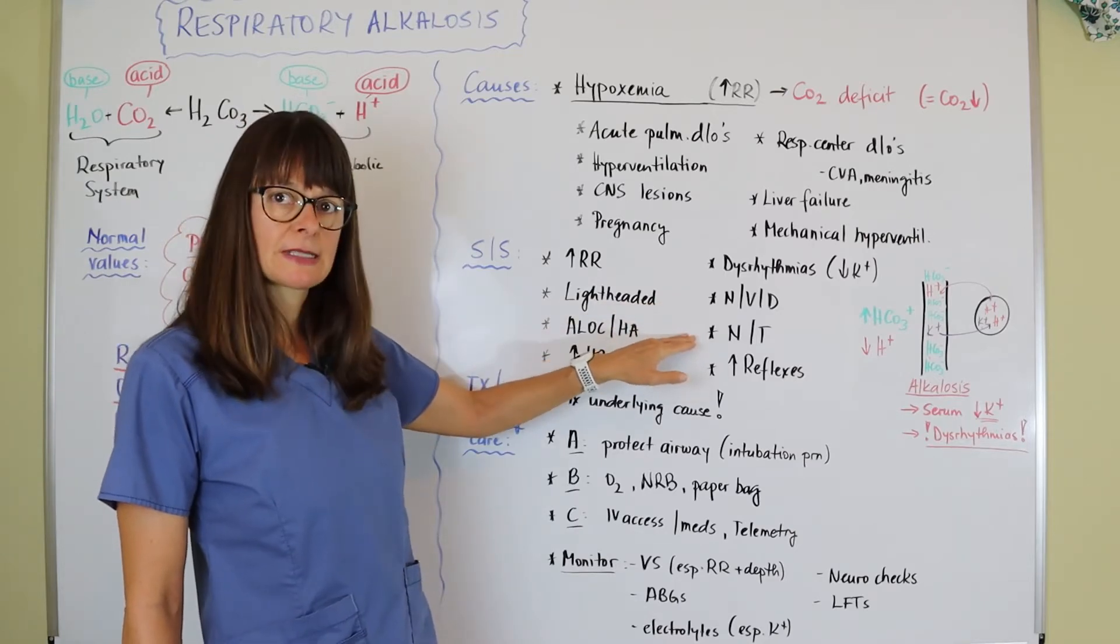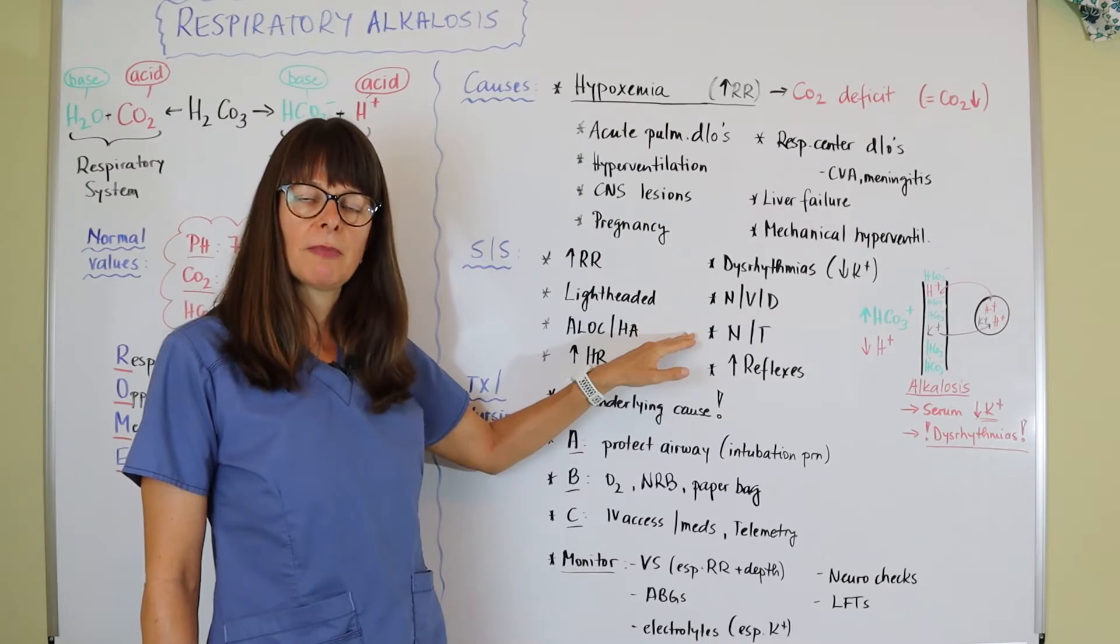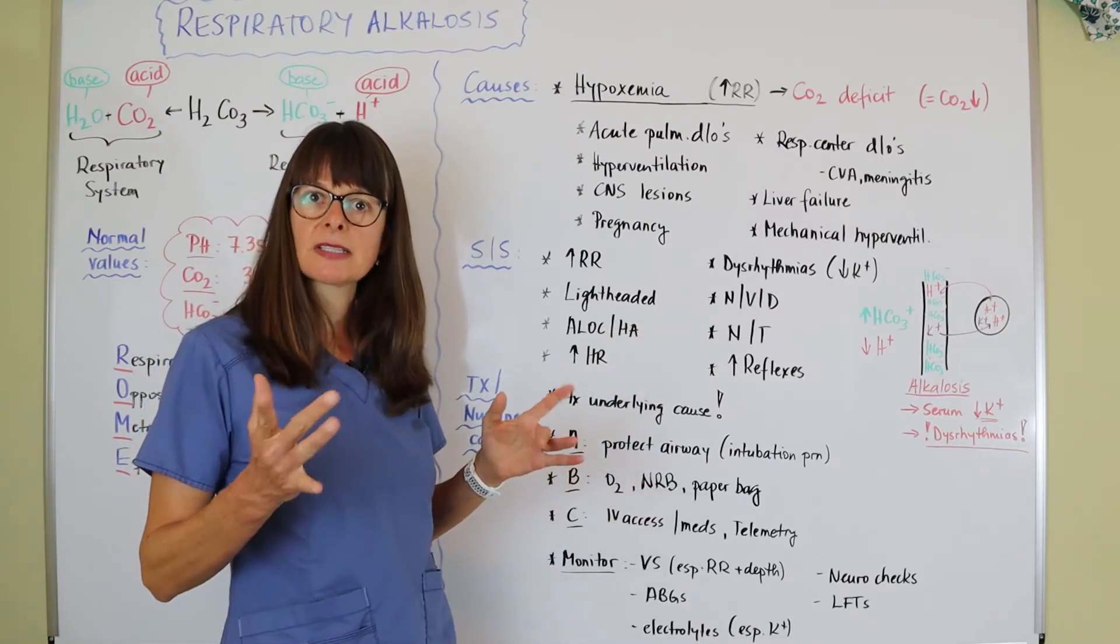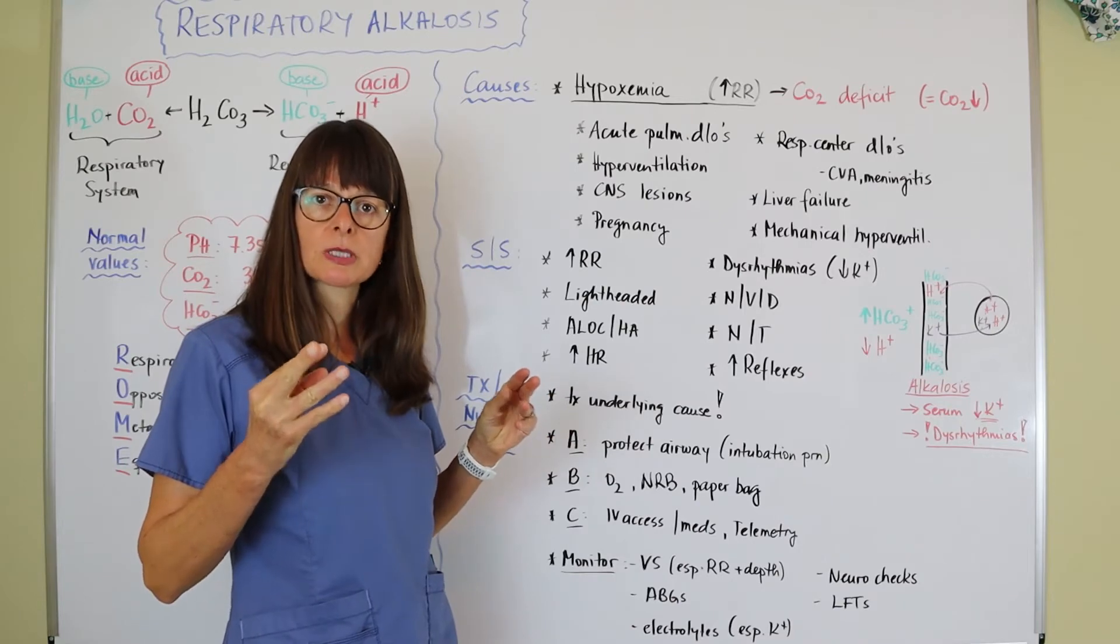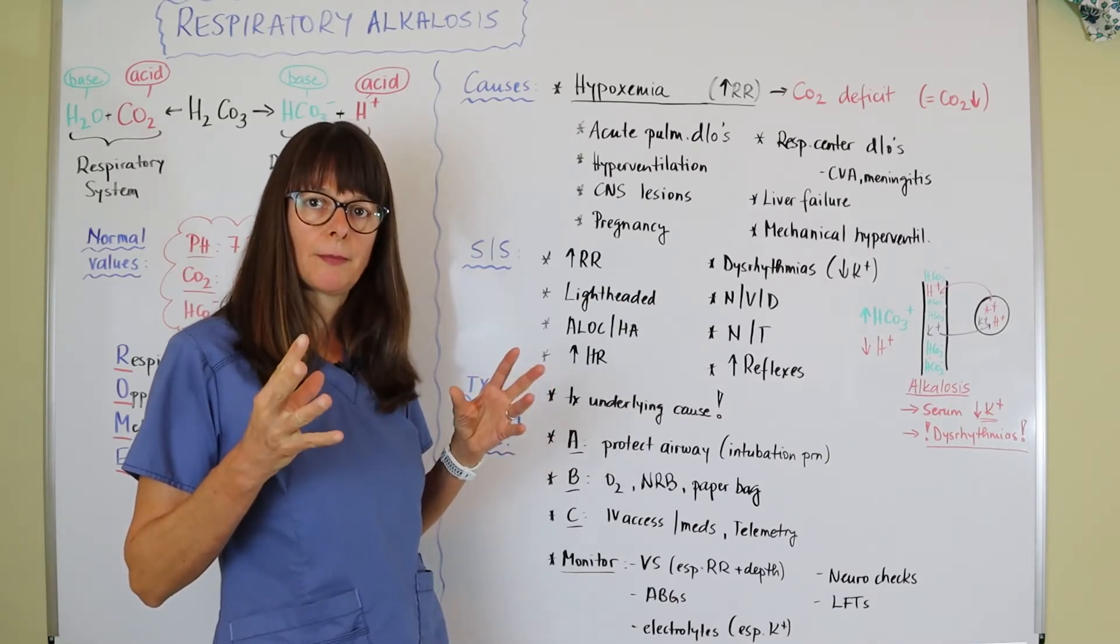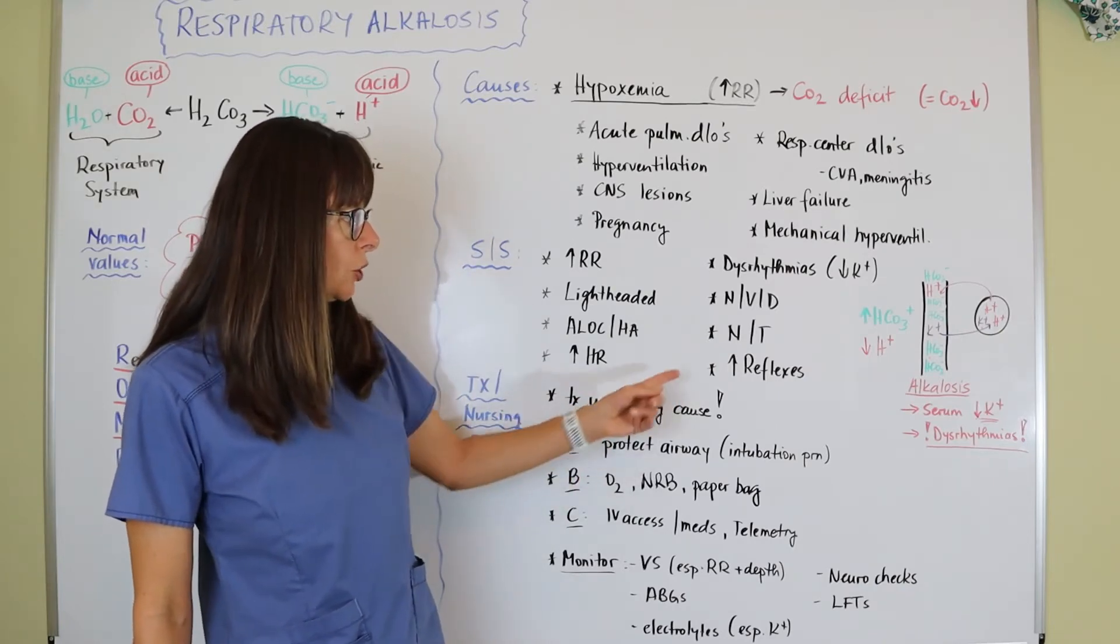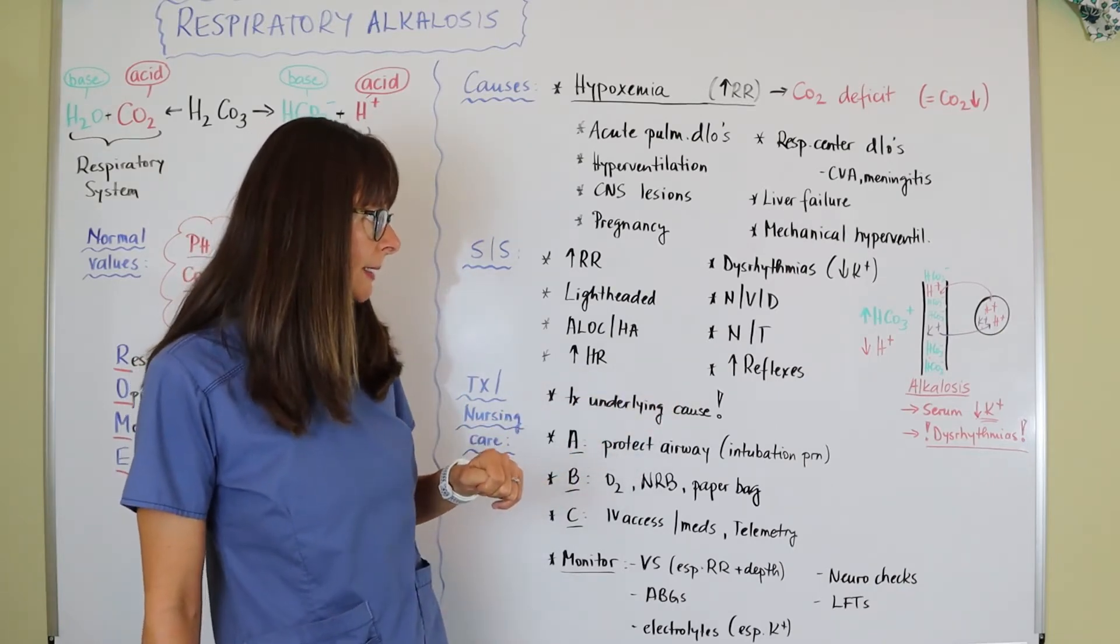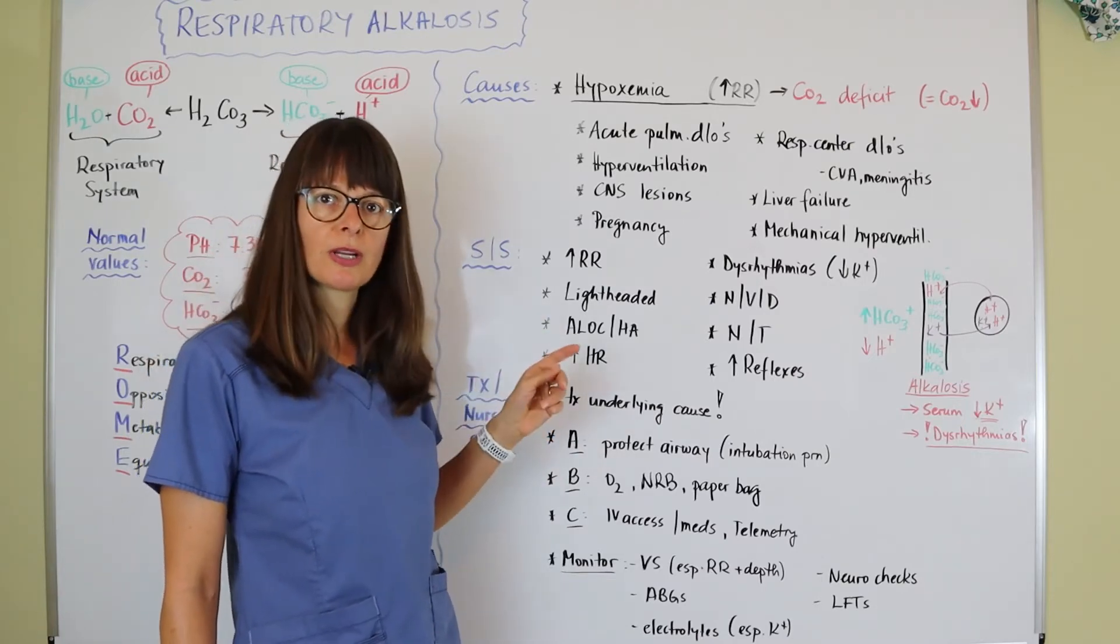Arrhythmias occur because of low serum potassium levels. Nausea, vomiting, diarrhea, numbness and tingling—think about again the person with the anxiety attack who can get numbness and tingling in the fingers and sometimes carpopedal spasms where the fingers just lock up. It can also lead to increased reflexes.